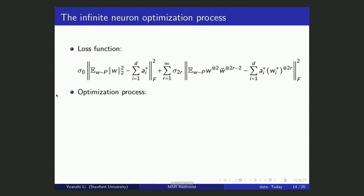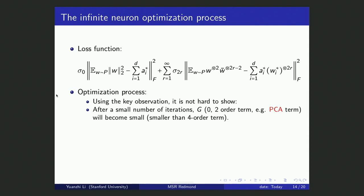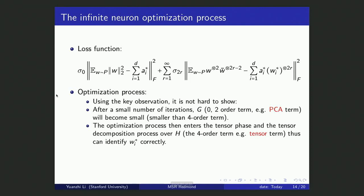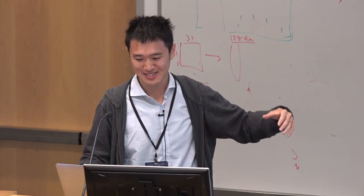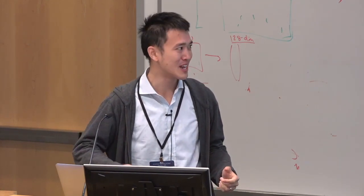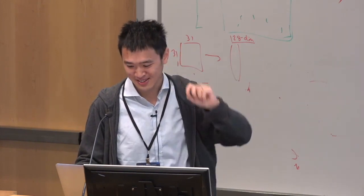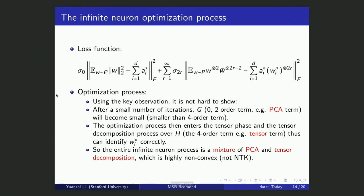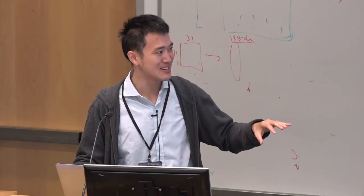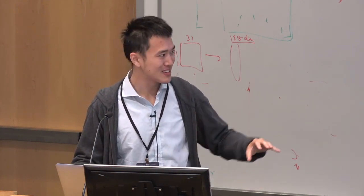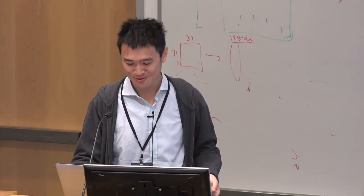With the sign-symmetric property, after a small number of iterations, the zero-order and second-order PCA-type terms become smaller than the first-order term, and the optimization enters the tensor decomposition phase. Tensor decomposition then identifies WI-star correctly — the distribution converges to a single-point distribution over WI-stars. So the entire infinite neuron process is a mixture of principal component analysis and tensor decomposition: super non-convex, not NTK, but with a good landscape.